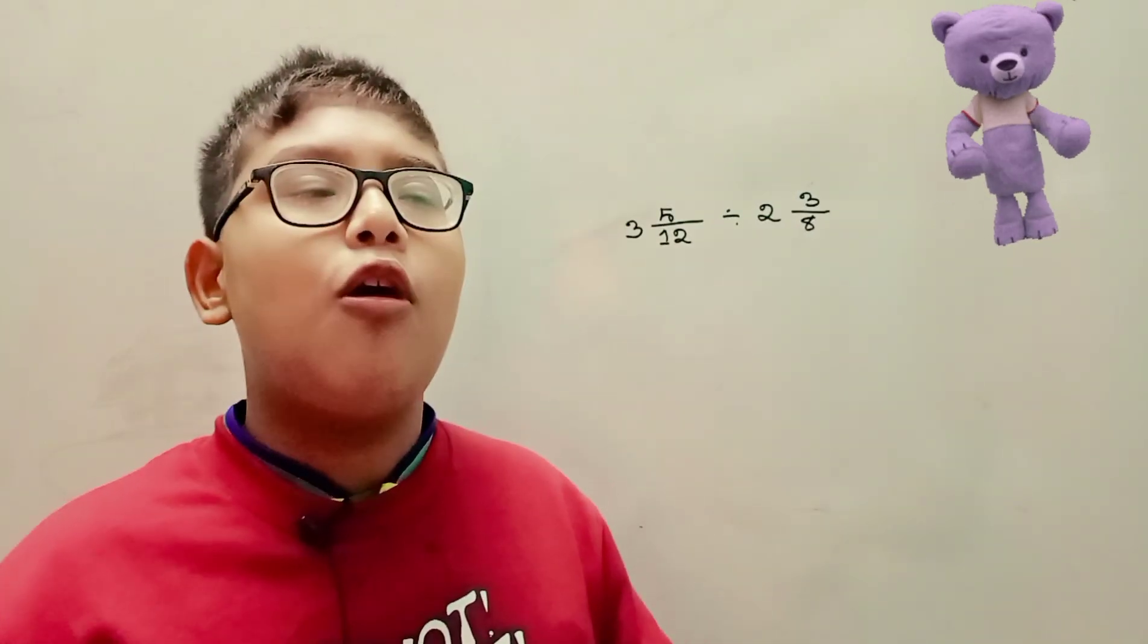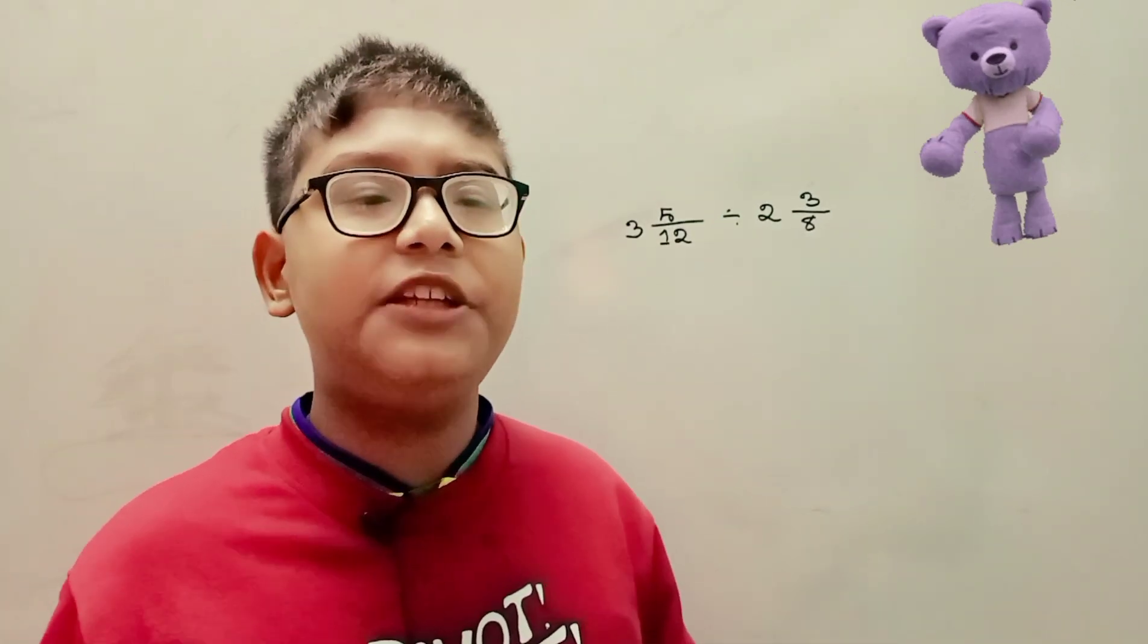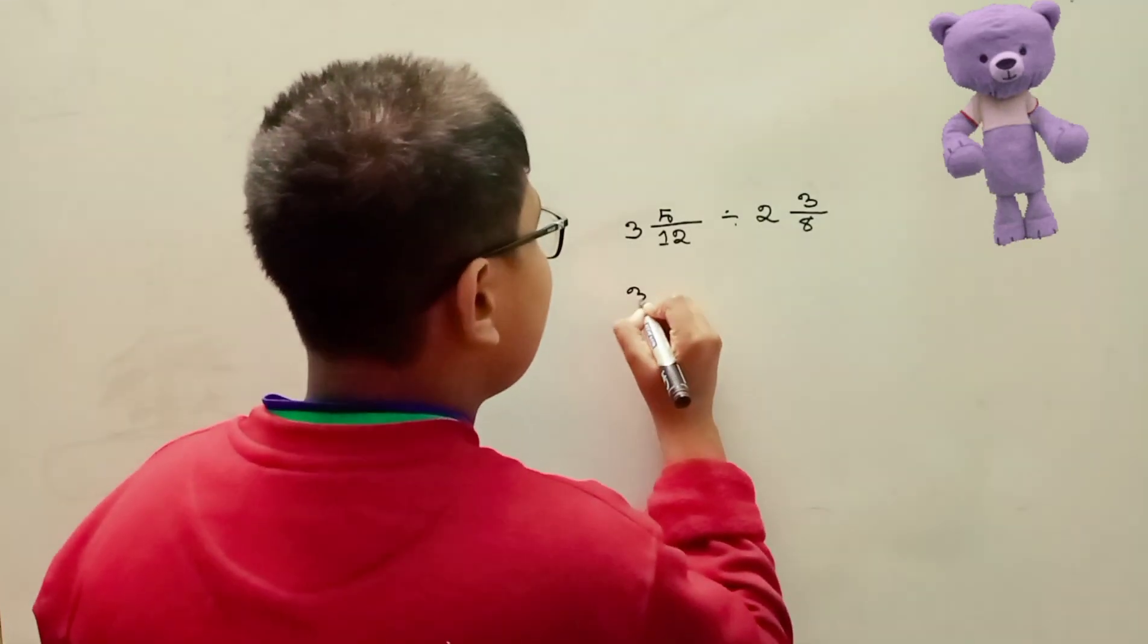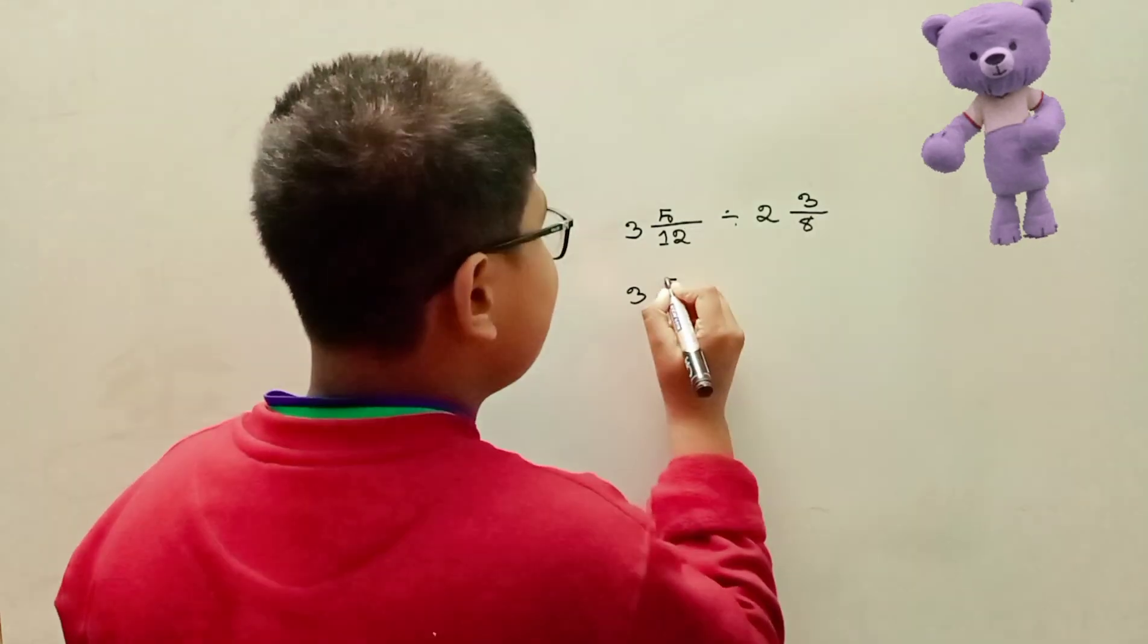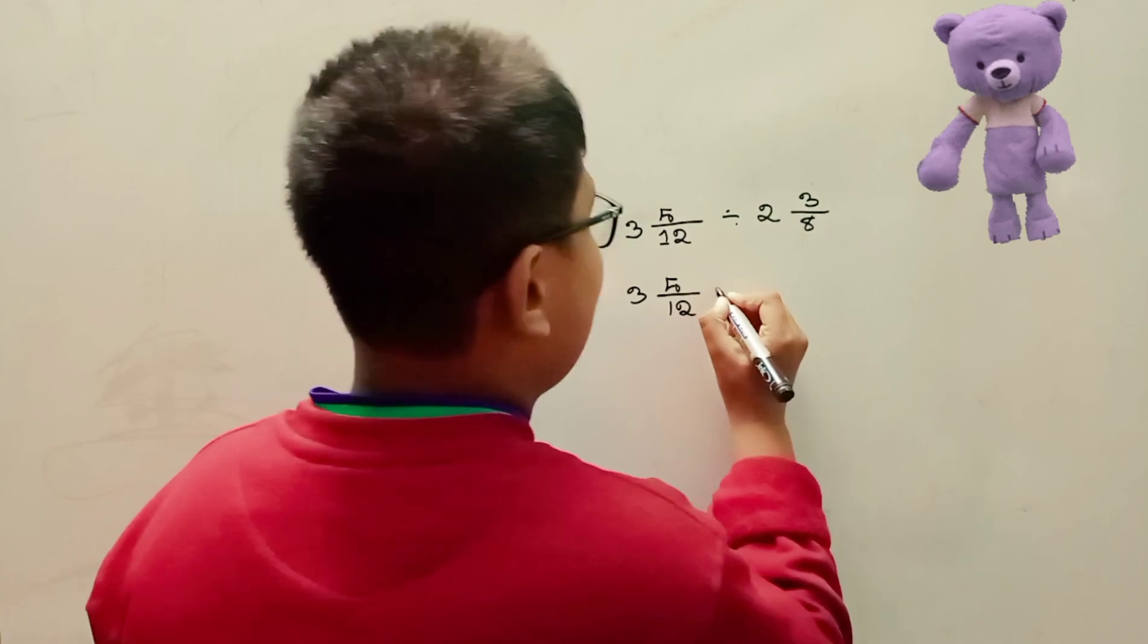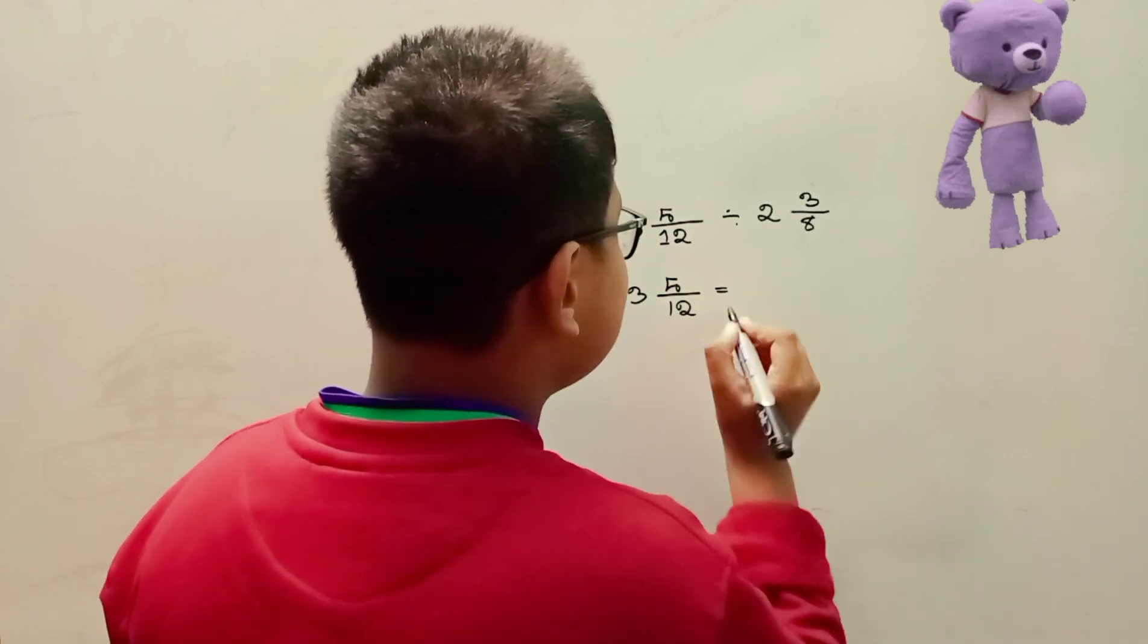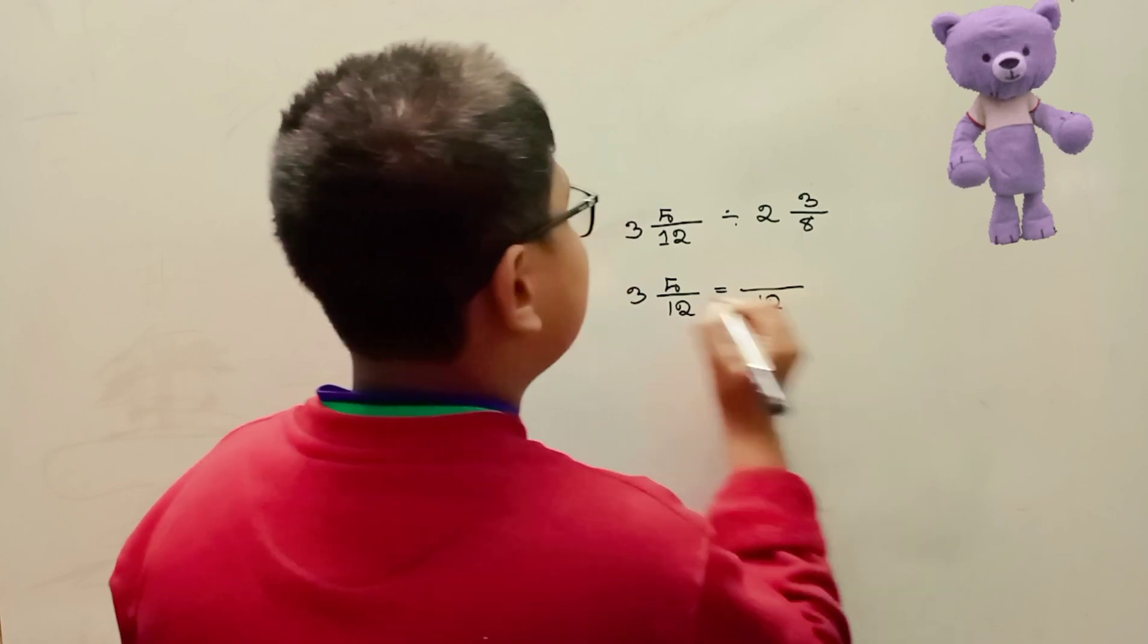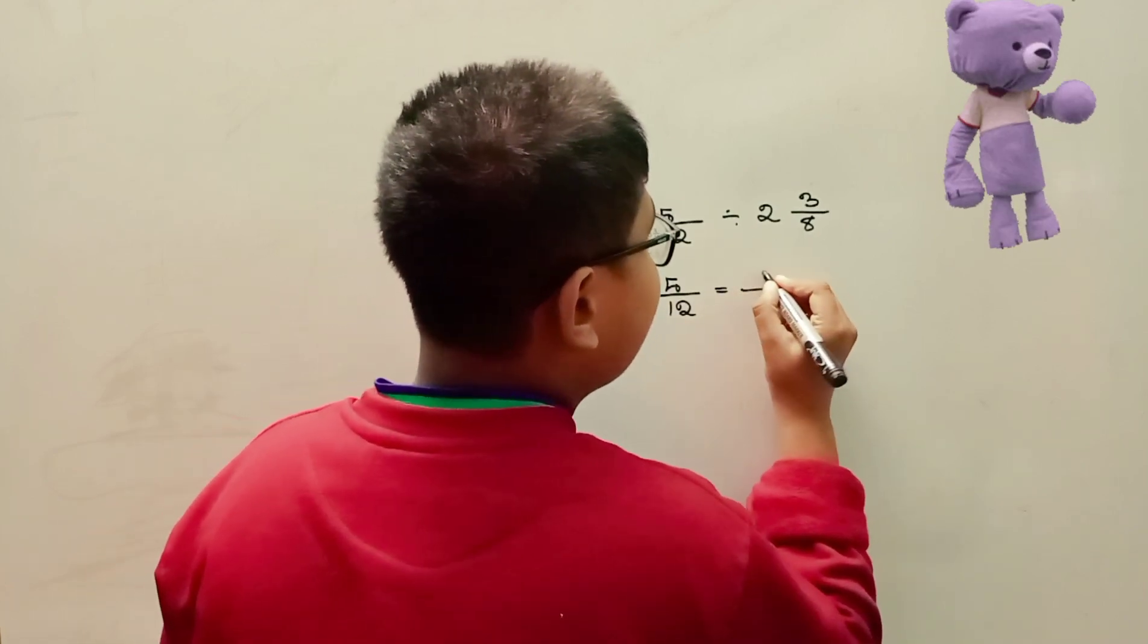So here we need to convert the fraction to an improper fraction. 3 whole 5 over 12 is the same as 12 times 3 is 36. 36 plus 5 equals 41, so 41 over 12.